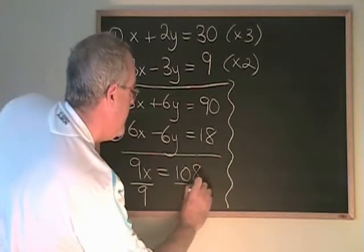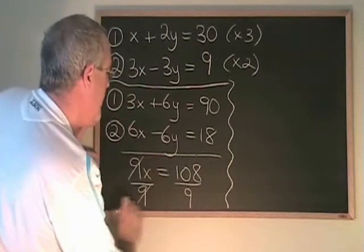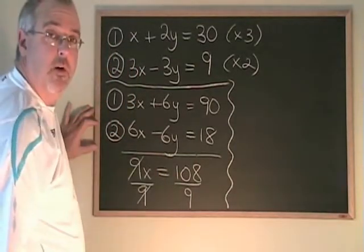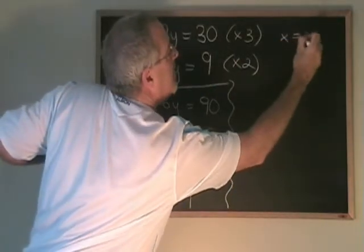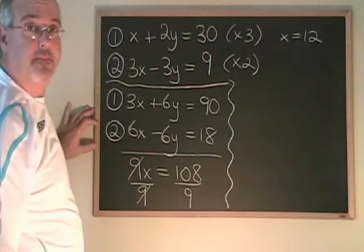If we divide both sides by 9, these cancel, and x is equal to 108 divided by 9, which is 12.